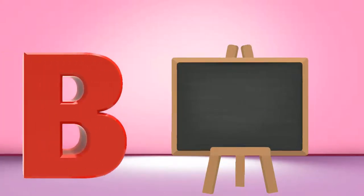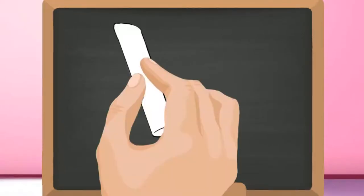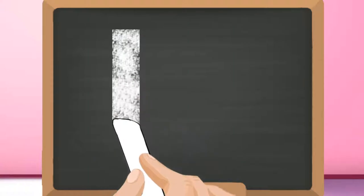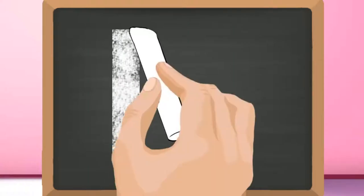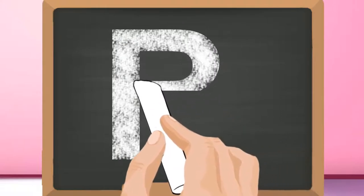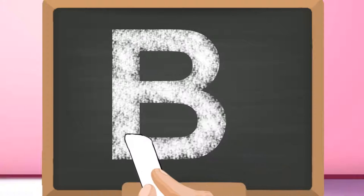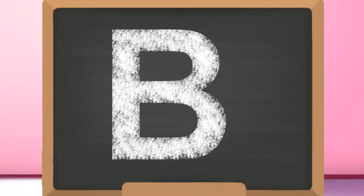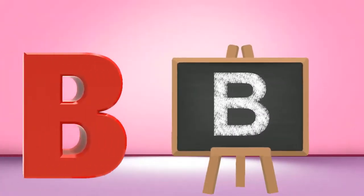B, capital B. Start from the top and draw a straight line down. Go back to the top and draw a curve to the middle. Then draw a curve joining the bottom. Capital B.